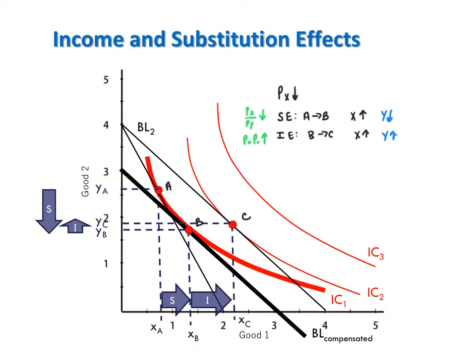Because the income effect shows the consumer buying more of good y when purchasing power goes up, we also now know that good y is a normal good. Finally, the total effect is a movement from bundle A to C. The substitution and income effects on x both pull x up, so the total effect unambiguously shows consumption of x increasing.